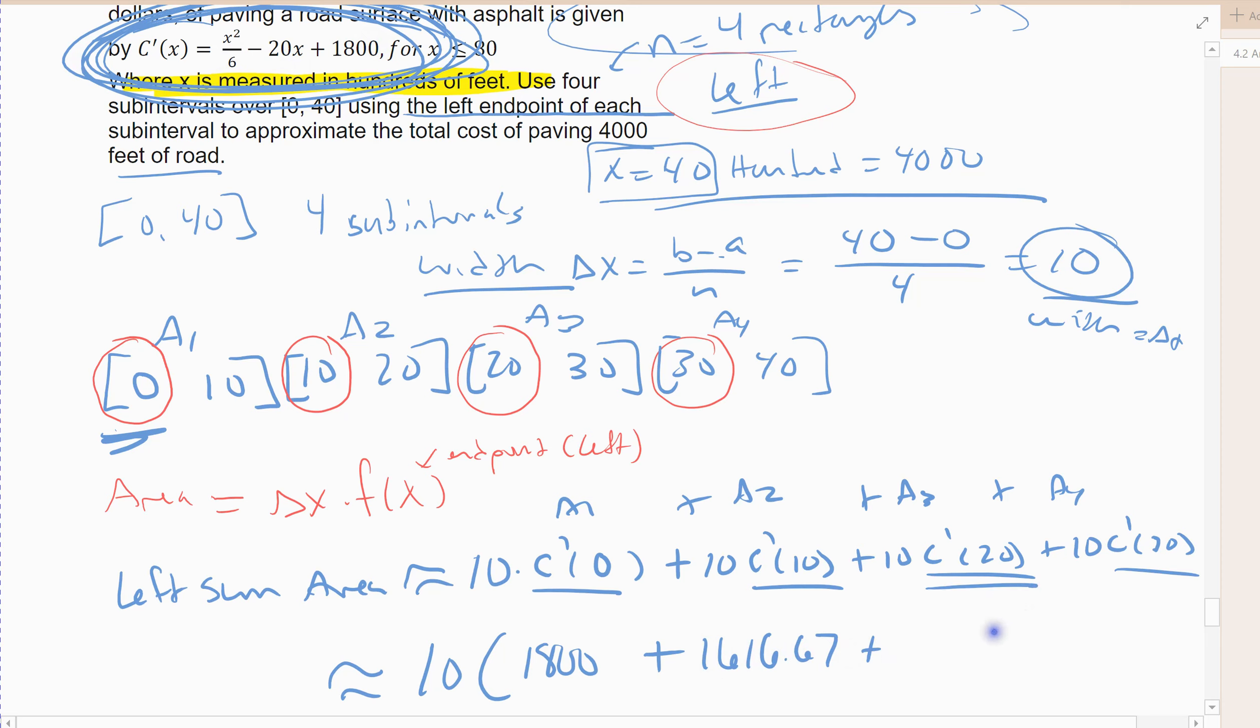Then the 20, when I plug 20 into that, it comes out 1466.67. And when I plug 30 in, that's like 30 if you can't read that, I get 1350. So there's my height. So those would be the heights. Again, this is why I didn't draw this one, because the heights are fairly large.